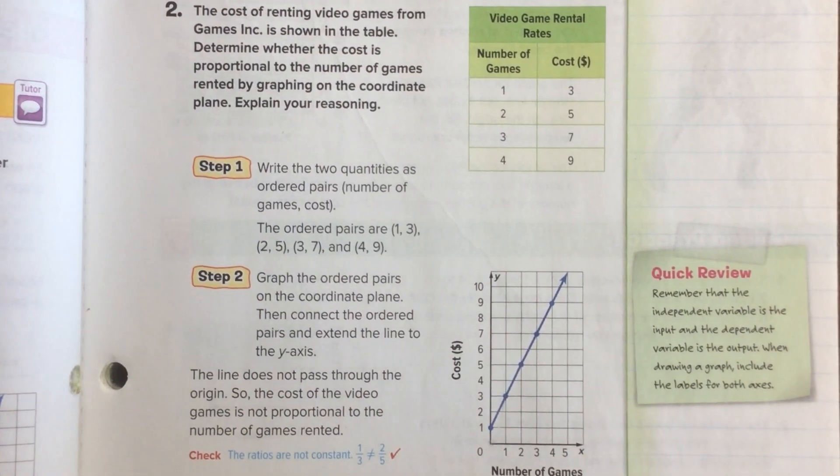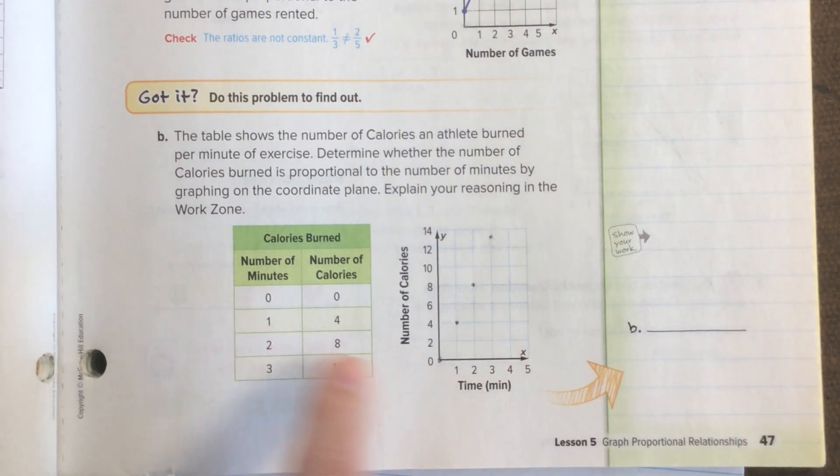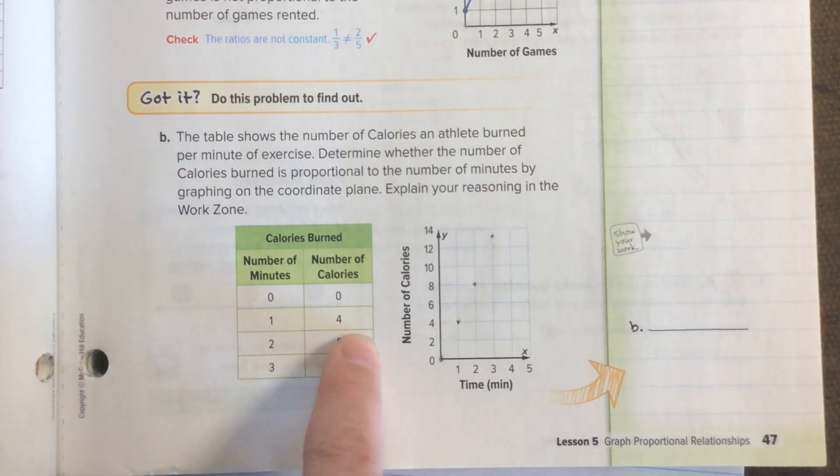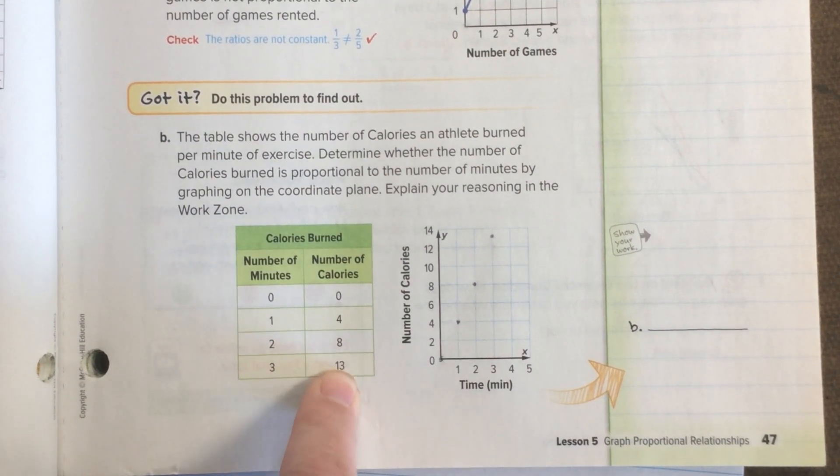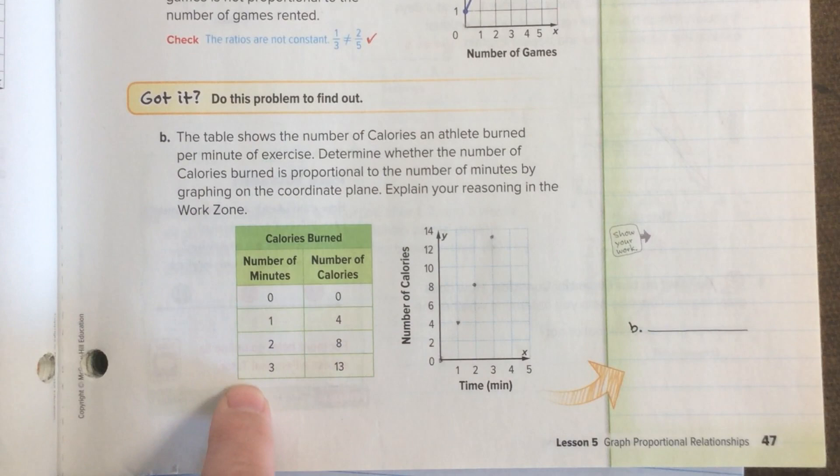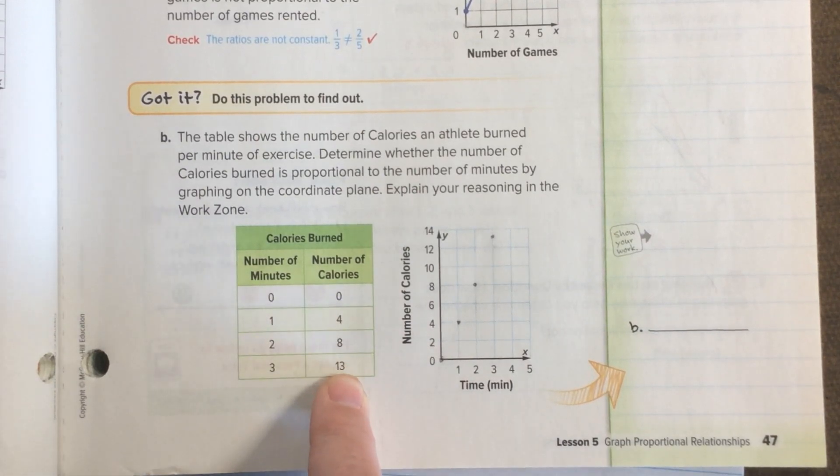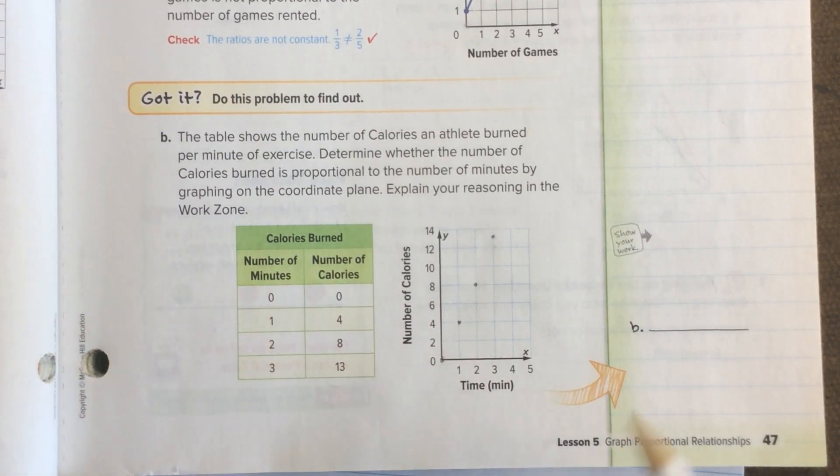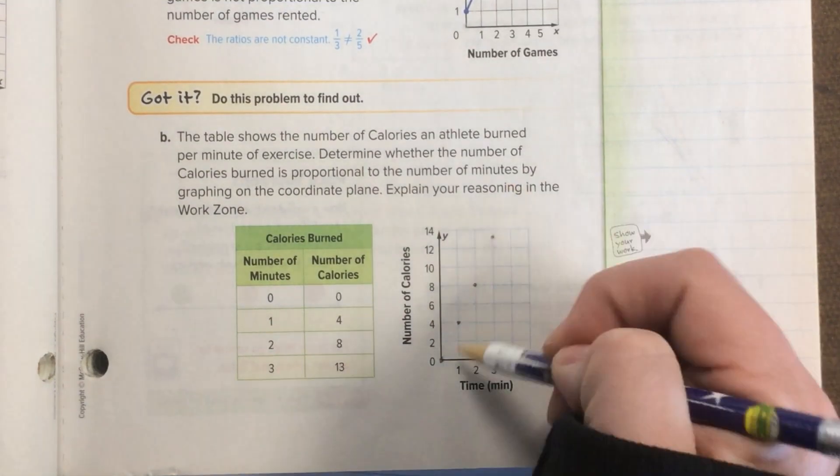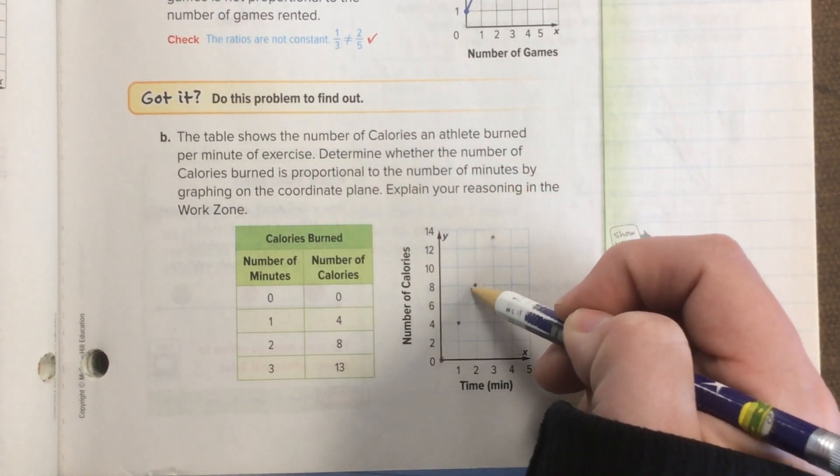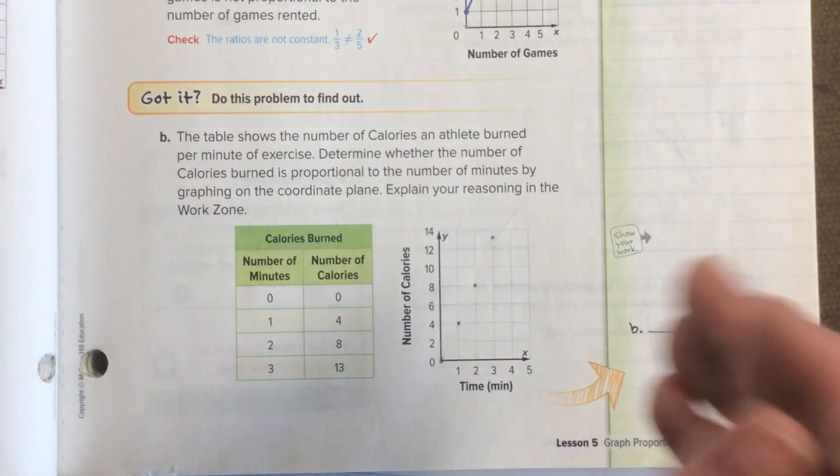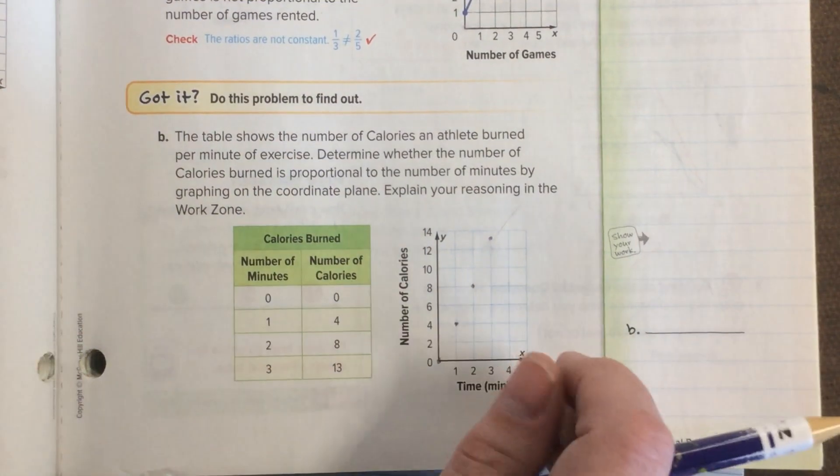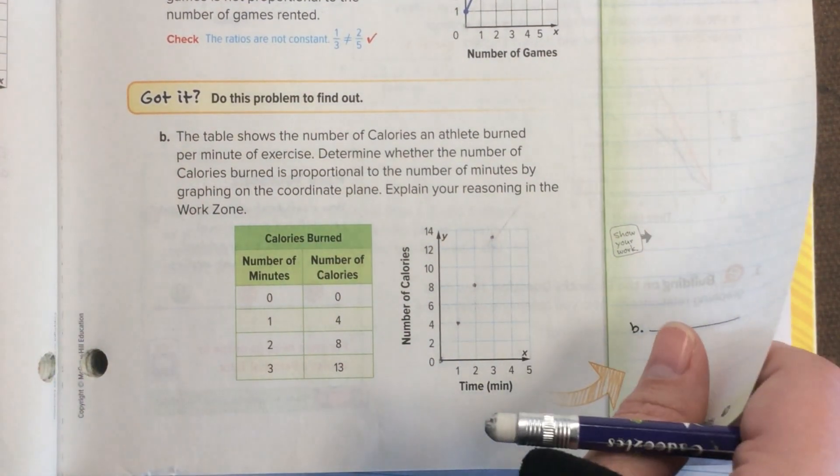Through the point zero, zero has to go. This next one, I've already graphed the points. Zero, zero, one to four, two to eight, three to thirteen. That one feels a little not following the pattern. If we followed the pattern, the three would probably be a twelve, not a thirteen. So, zero, zero is there, which is good. And it would be a straight line to here, but then the angle changes. So, this does not make a straight line. Therefore, this one is not proportional. And that's really the basic idea.